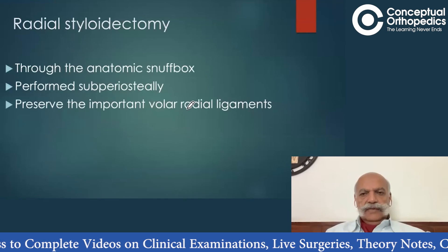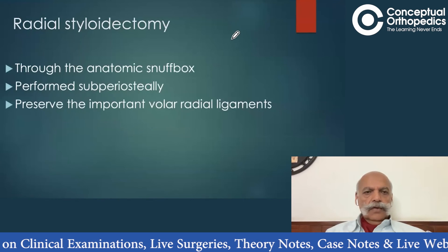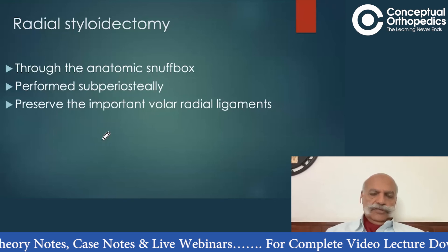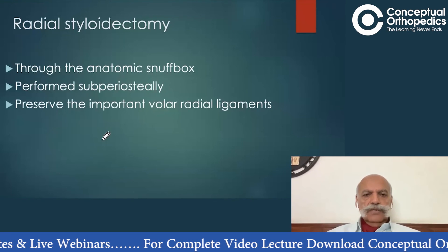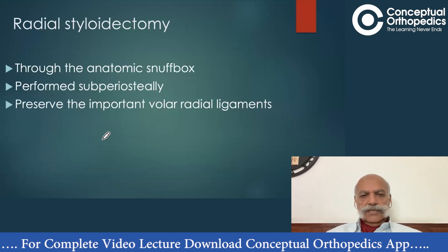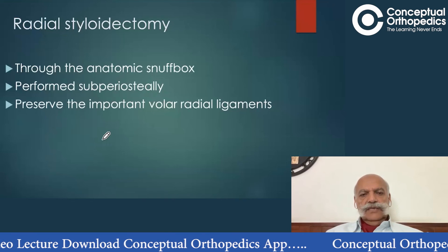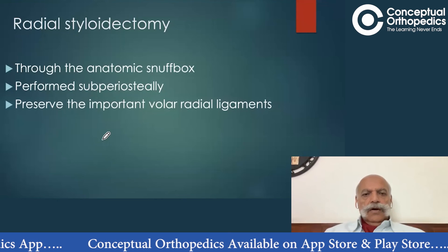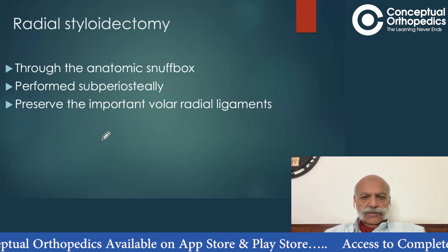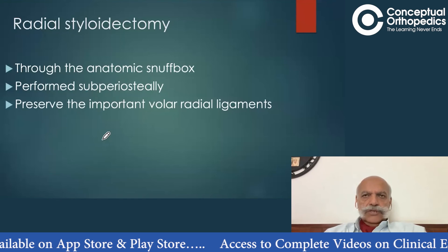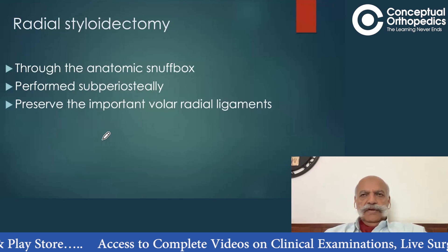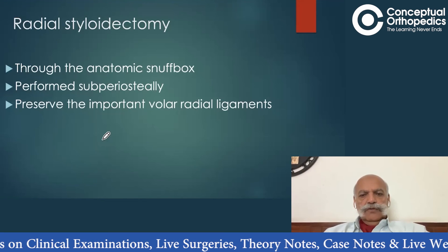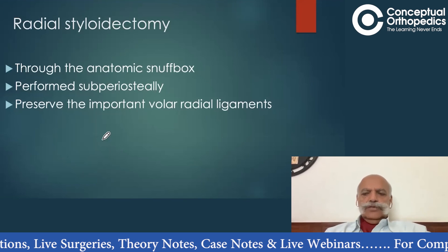We decided that this patient was more apt for a radial styloidectomy operation. This operation is usually performed through the anatomical snuff box, because the radial styloid is deeply seated in the snuff box and easily approached from there. It is a sub-periosteal excision of the radial styloid, but the most important thing — which we will be repeating again and again — is that it is important to preserve the volar radial ligaments.